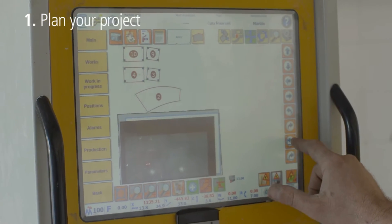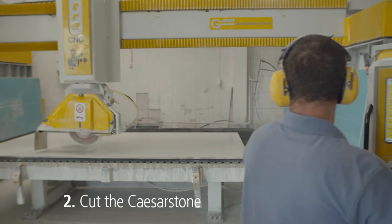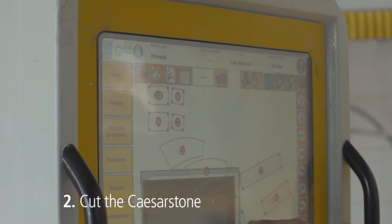First, you'll need to carefully plan your project. Next, cut the scissor stone into the pieces you need for the coffee table.